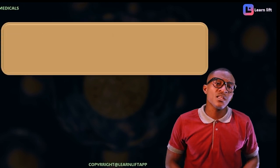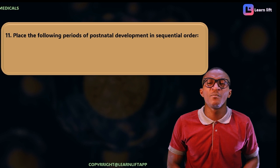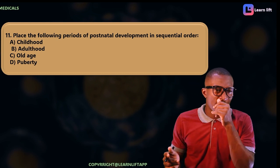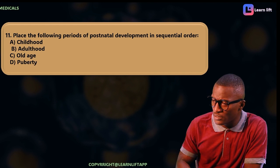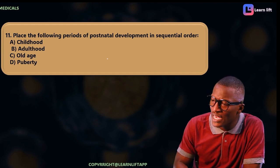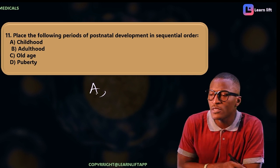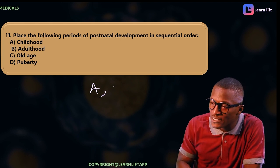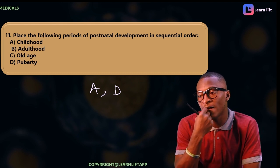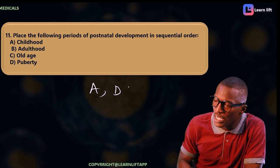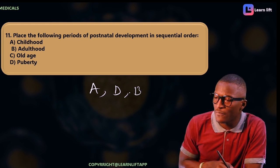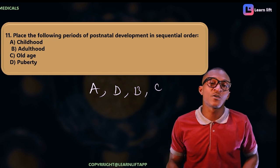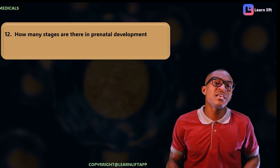The next question says: place the following periods of postnatal development in sequential order — childhood, adulthood, old age, puberty. The first stage is childhood. From childhood we go to puberty, then after puberty comes adulthood, followed by old age. So the correct sequential arrangement is: childhood, puberty, adulthood, old age.